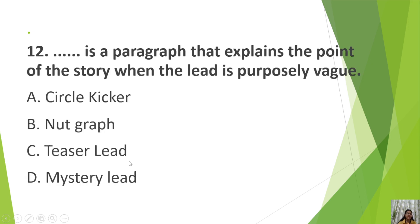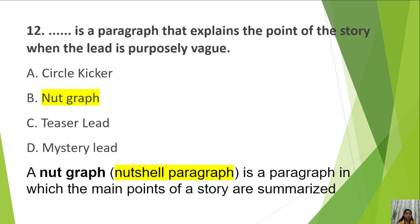Next: a paragraph that explains the point of the story when the lead is purposely vague is A. Circle kicker, B. Nut graph, C. Teaser lead, D. Mystery lead. When the lead is purposely vague, what explains it is the nut graph or nutshell paragraph, which explains the point of the story and summarizes it.